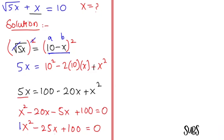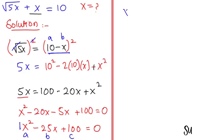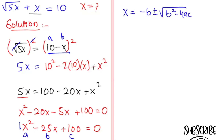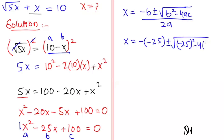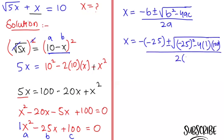So I am going to use the quadratic formula. Here we have a, b, and c values. The formula is x equals minus b plus or minus root(b² minus 4ac) over 2a. So x equals minus(minus 25) plus or minus root((minus 25)² minus 4 times 1 times 100) over 2 times 1.